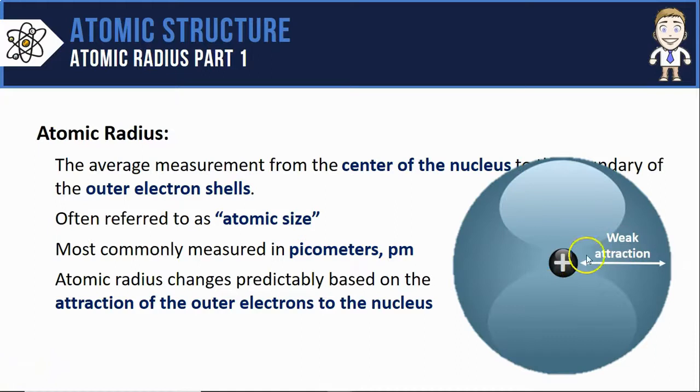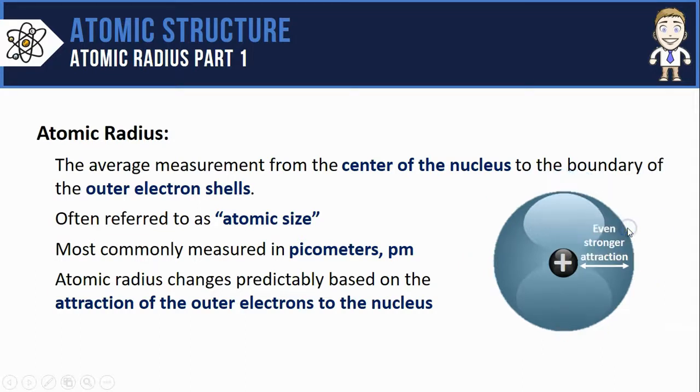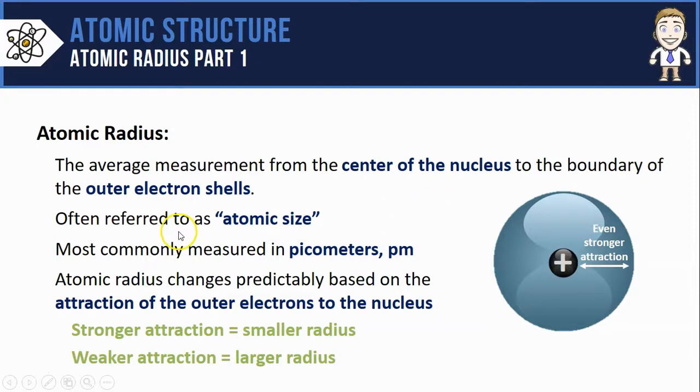So if there's an atom with a very weak attraction between that positive nucleus and those outermost electrons, it's going to be much larger. If the attraction was stronger however, it's going to pull those electrons in closer and result in a smaller radius. An even stronger attraction would have an even larger effect and produce an even smaller atom. To summarize that, we could say that a stronger attraction results in a smaller radius, or a weaker attraction a larger one.